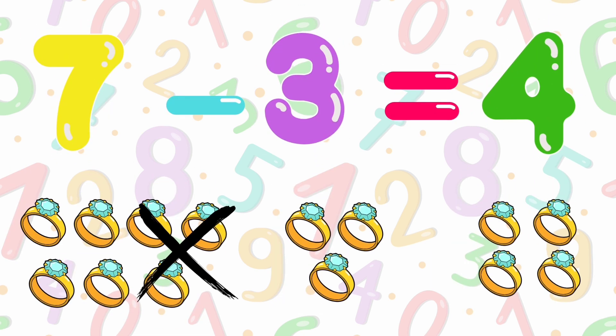7 minus 3 is equals to 4. 7 rings minus 3 rings is equals to 4.